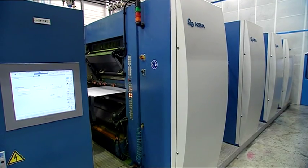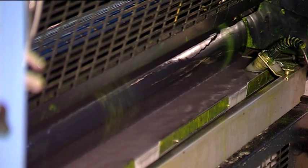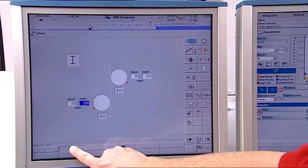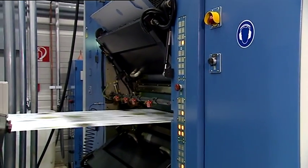The C16 is designed for environmentally friendly, alcohol-free printing and allows push-button conversion between direct and indirect dampening. This ensures optimum fount solution metering on different substrates.